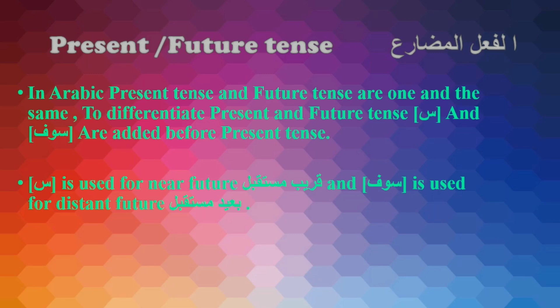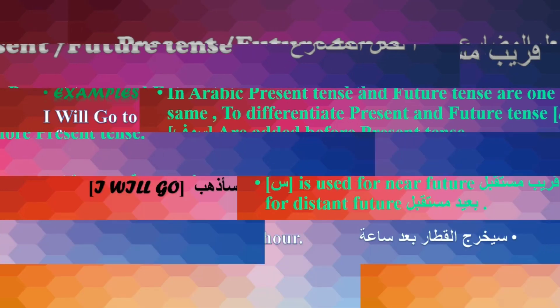In Arabic, present tense and future tense are one and the same. To differentiate present tense and future, 'seen' and 'saufa' are added before the present tense. 'Seen' is used for near future (mustakbil karib) and 'saufa' is used for distant future (mustakbil ba'id).